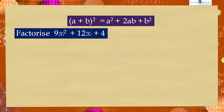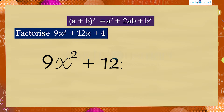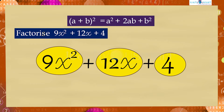The given expression is 9x² + 12x + 4. Clearly we can say that there is no single common factor. Then what should we do? Since the given expression has only three terms...